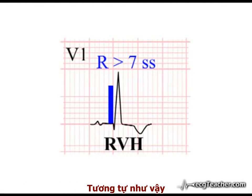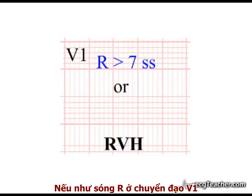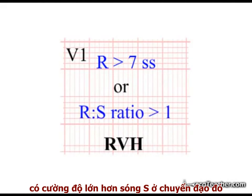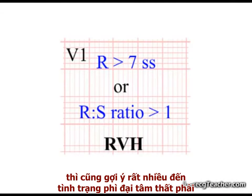Equally, if the R wave in lead V1 is higher in amplitude than the S wave in that lead, this is also strongly suggestive of underlying hypertrophy.